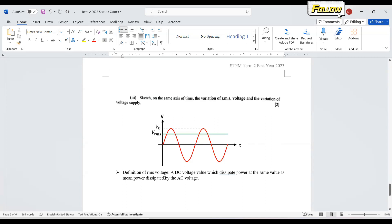But we know about RMS. The definition is a DC voltage value which dissipates power at the same value as the mean power dissipated by the AC voltage. So we want to sketch the RMS voltage and the voltage supply. RMS voltage is a DC voltage, which has a lower value compared to the peak voltage.